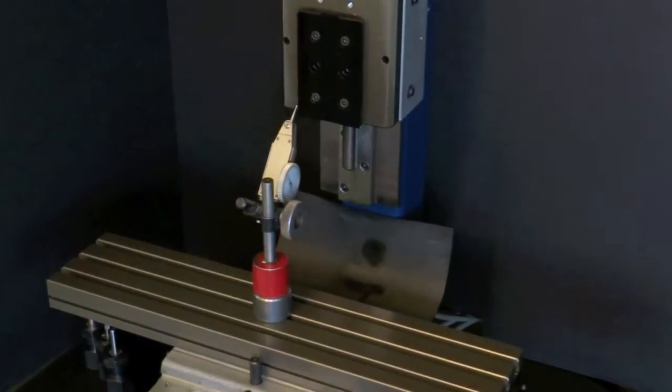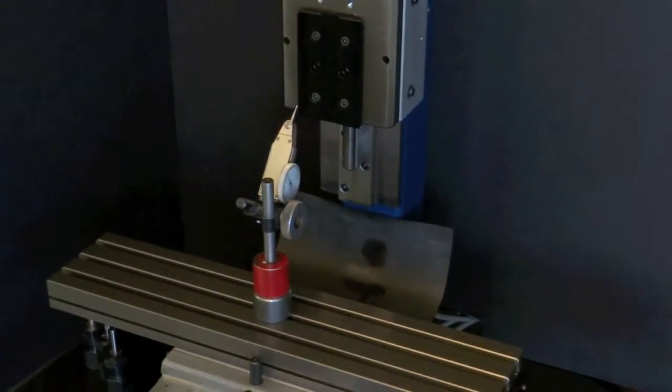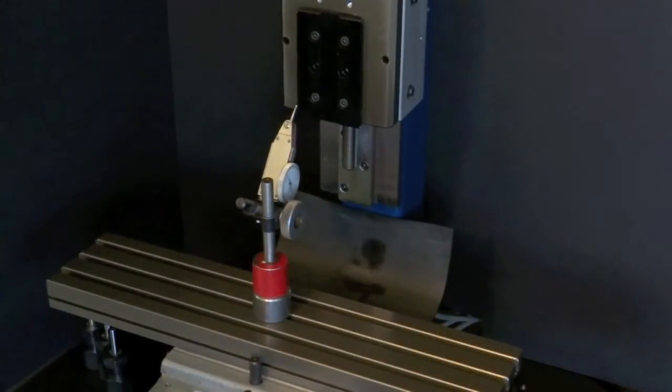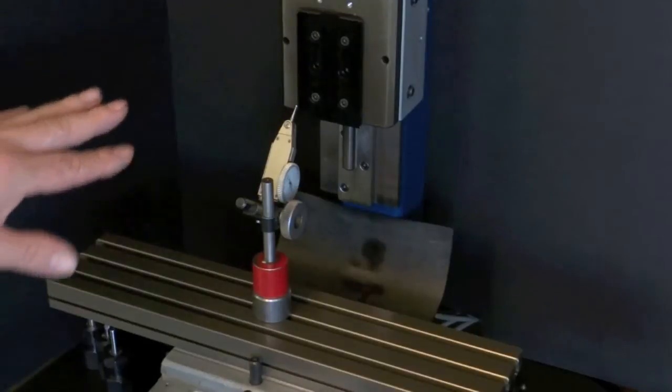Alright, today we're going to get into tramming the Tormach mill. At the shop we call it sweeping the table - it's pretty much the same thing. But here we're going to do one thing before we do anything else.